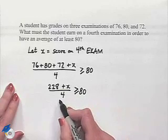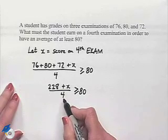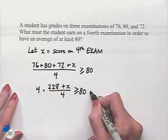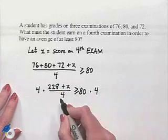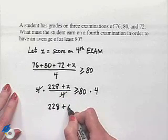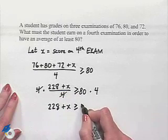Next, we can multiply both sides of the inequality by 4 in order to eliminate the denominators. Multiply by 4 here and by 4 there. That's going to leave us with 228 plus x is greater than or equal to 320.